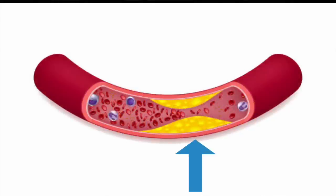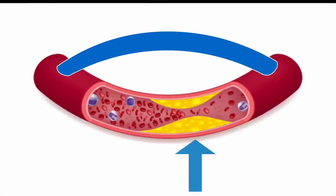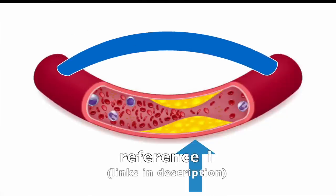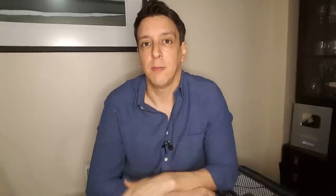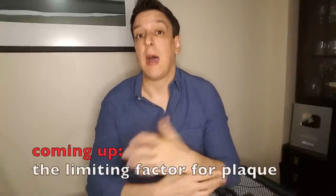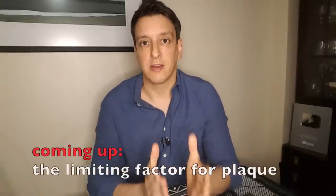Surgeons take a vein from somewhere else, like the leg for example, and they transplant it to the heart so the vein is used as a detour to go around the blockage — and those veins can grow plaque. So this tells us that there's nothing fundamental about a vein that makes it impossible for plaque to grow.